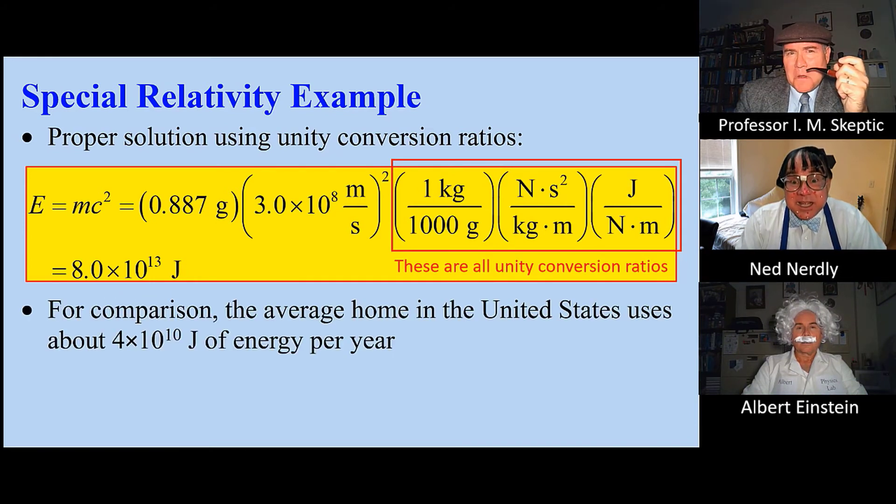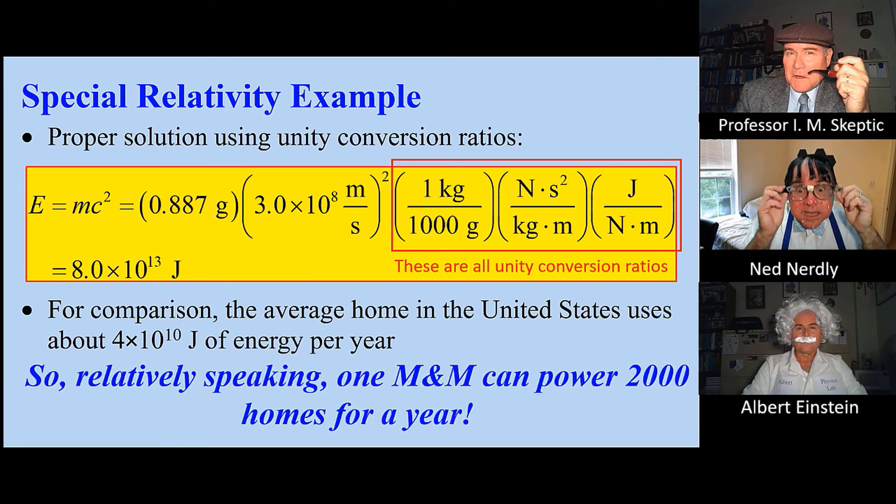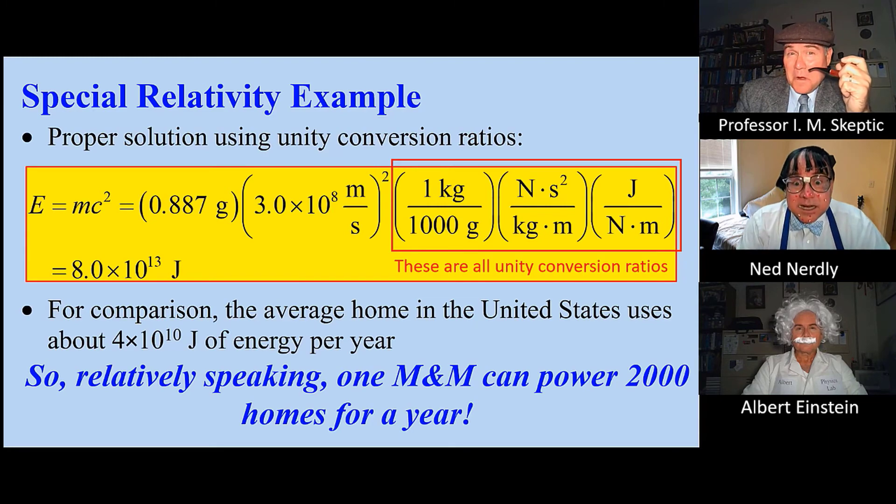For comparison, the average US home uses about 4 times 10 to the 10th joules in a year. So, relatively speaking, one M&M can power 2,000 homes for a year.